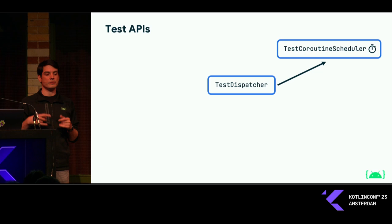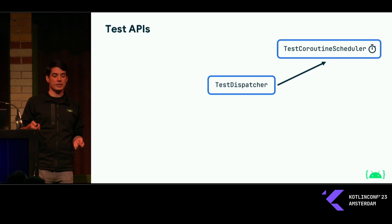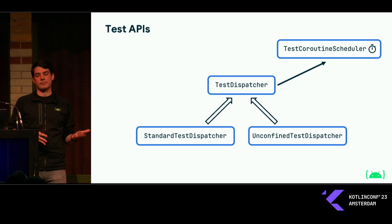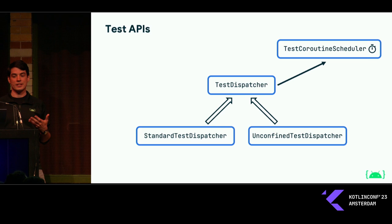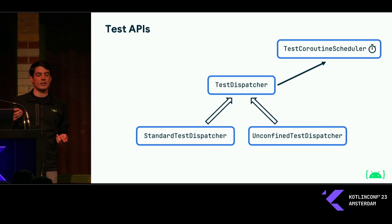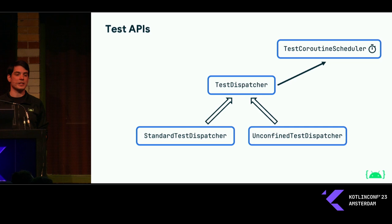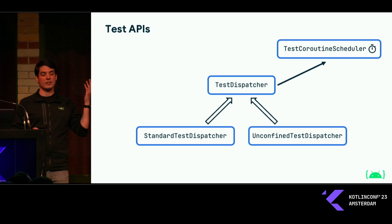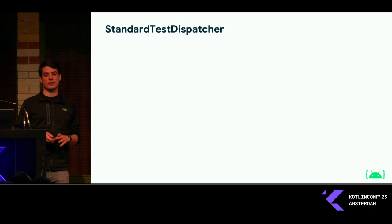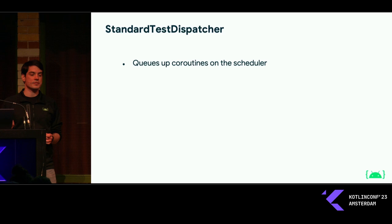The scheduler is where most of the implementation lives, and we have test dispatchers which are coroutine dispatchers that depend on this scheduler. TestDispatcher is actually an interface with two different implementations available in the library: StandardTestDispatcher and UnconfinedTestDispatcher. Both rely on the scheduler behind the scenes, they just have slightly different behavior. StandardTestDispatcher will queue up any coroutines you start on it — they'll queue on the scheduler and only execute when they get time or you advance them manually. UnconfinedTestDispatcher will start executing newly started coroutines eagerly.